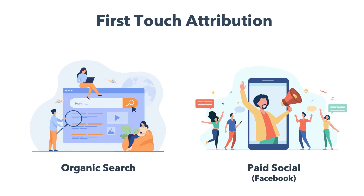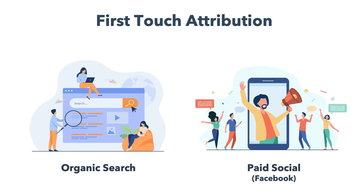For example, say a visitor finds your website through organic search. A week later, they see a Facebook ad advertising your products, click the ad, and go on to make a purchase. In this case, the organic search would get 100% of the credit for that conversion.